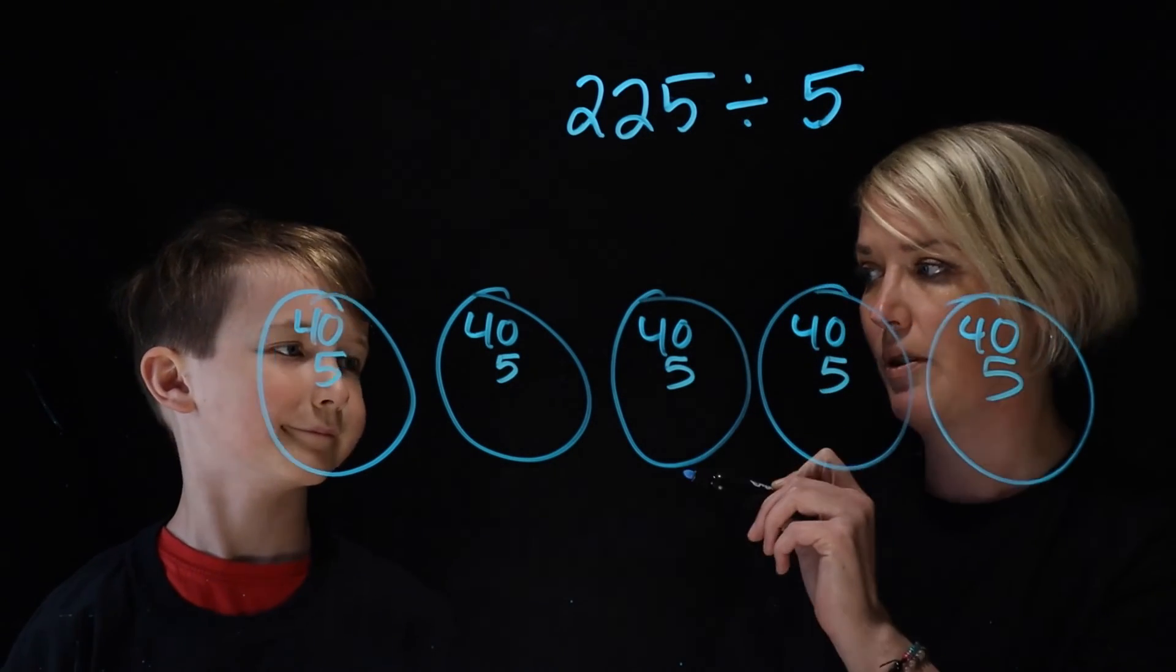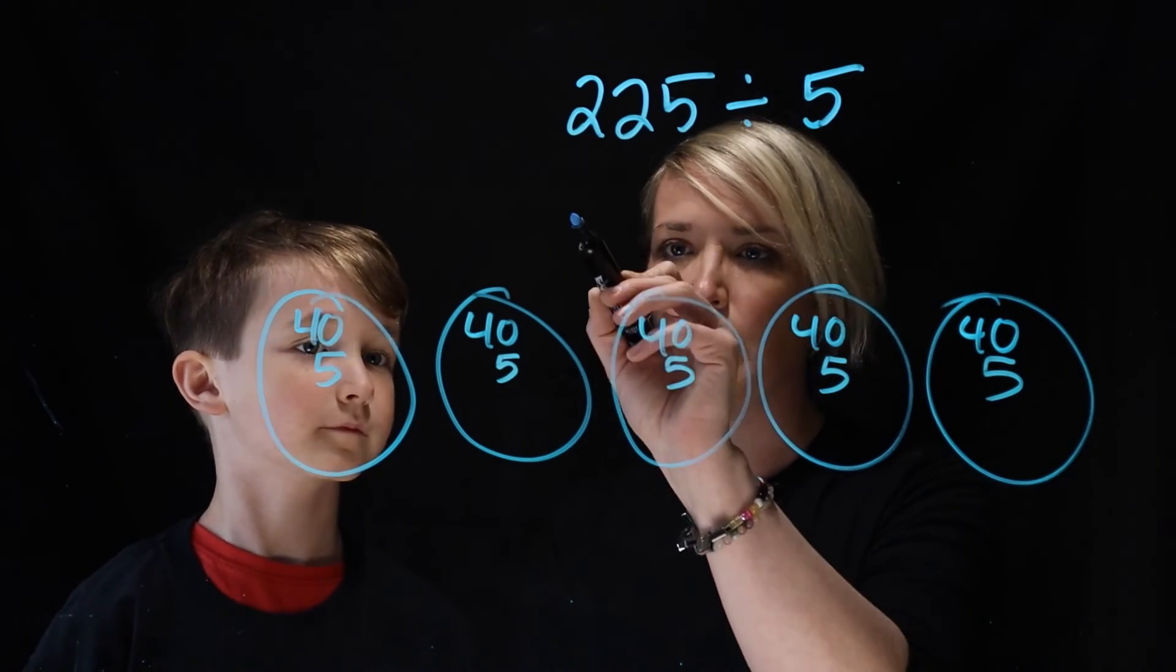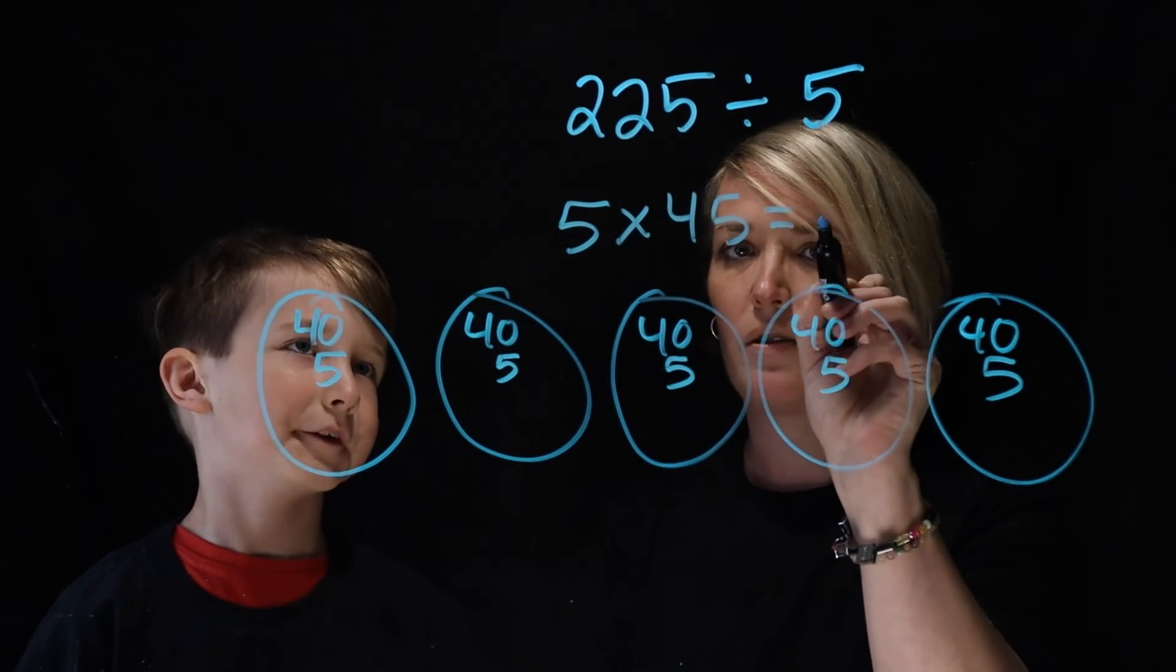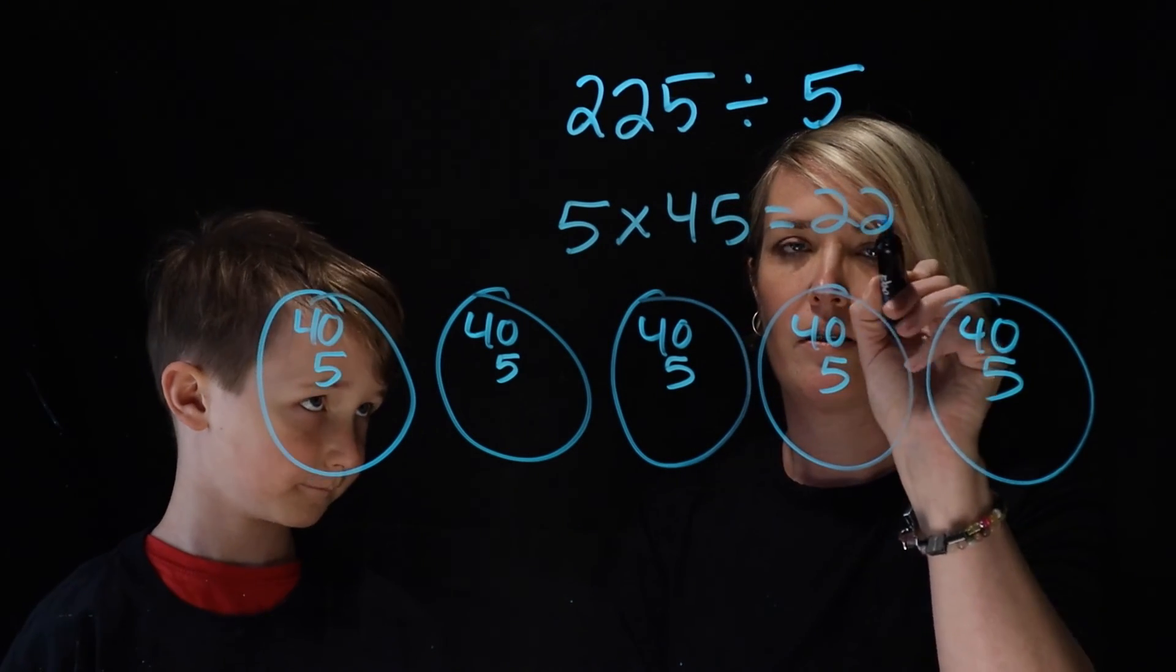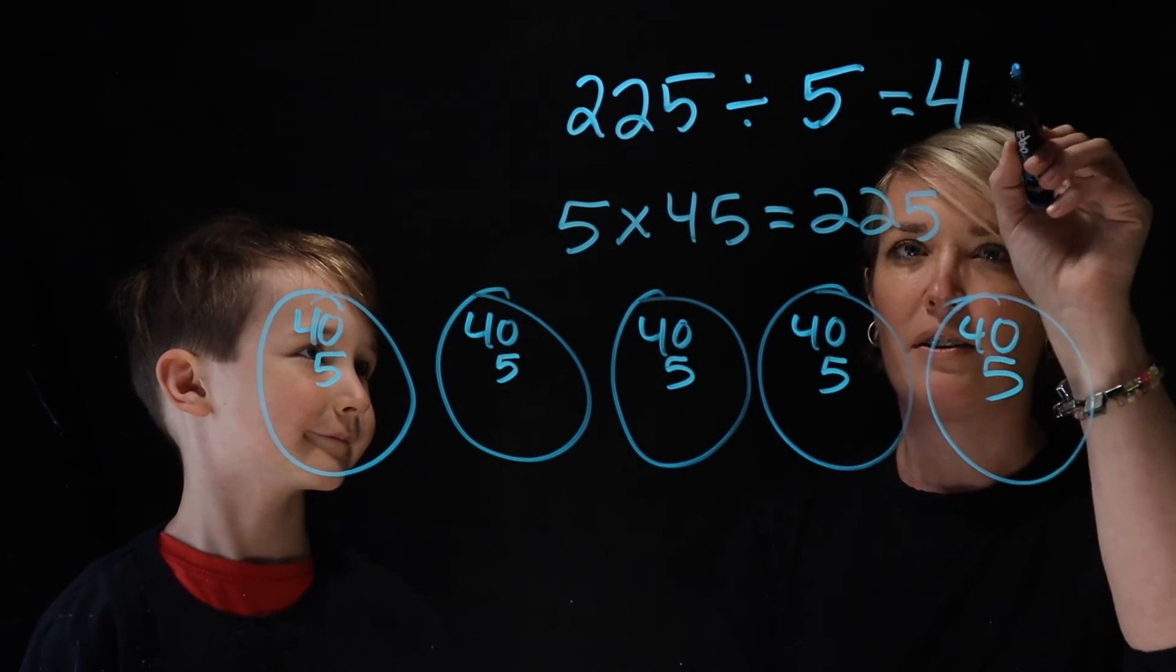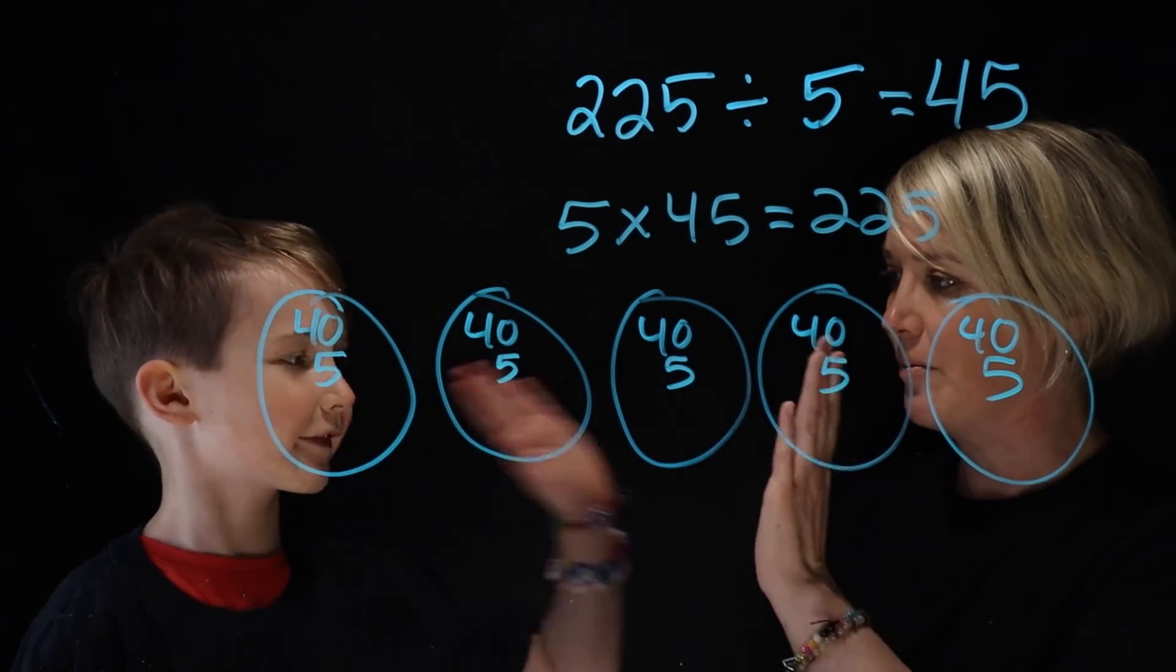Yeah, and this will give you 225. Yes. So basically what you told me was that 5 groups of 45 equal 225. Okay, so what's 225 divided by 5? 45. Oh my, that is fantastic. Great job, thanks, bye.